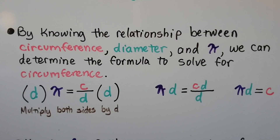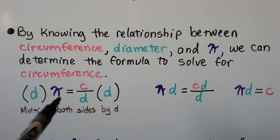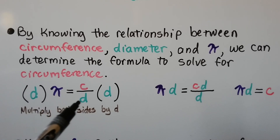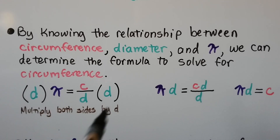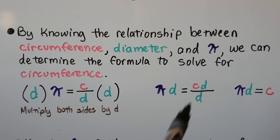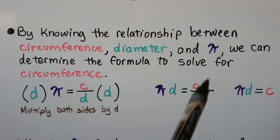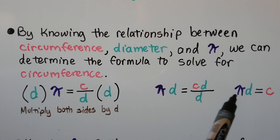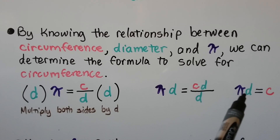By knowing the relationship between circumference, diameter, and pi, we can determine the formula to solve for circumference. We know pi equals the quotient of the circumference and the diameter. If we multiply both sides by d, we eliminate the d on the right side, and we get pi times the diameter equals the circumference.